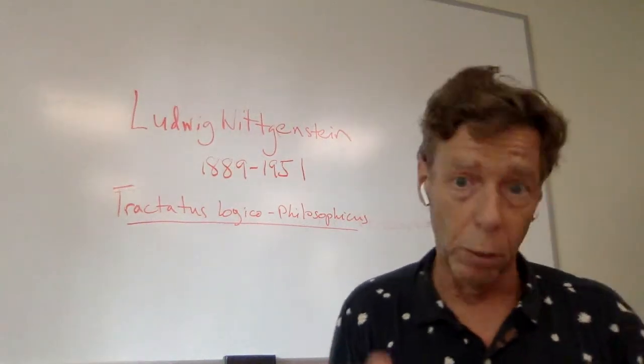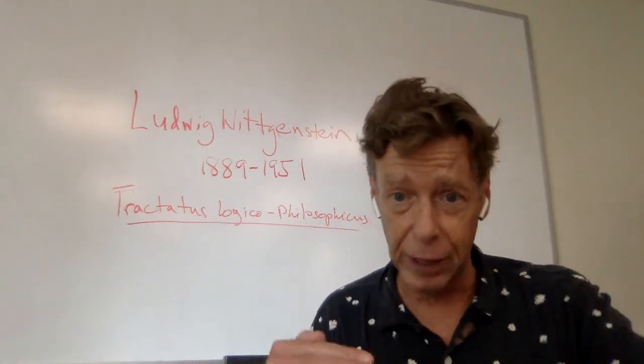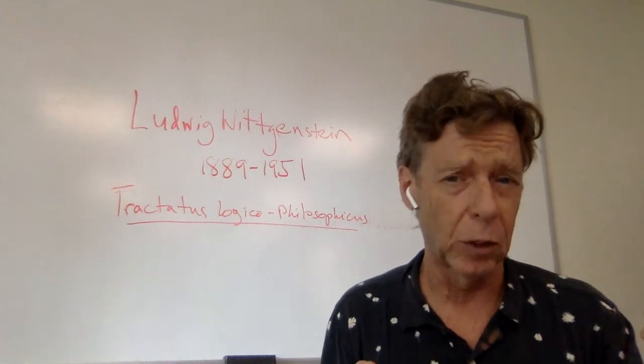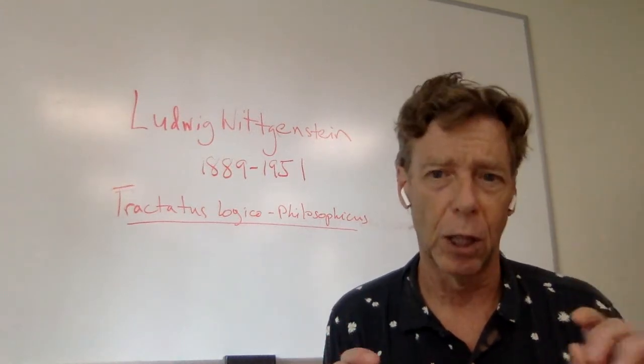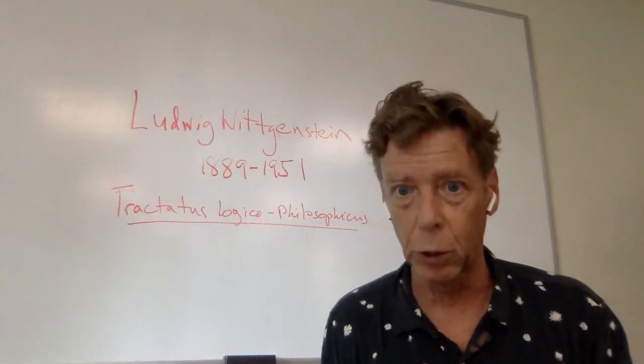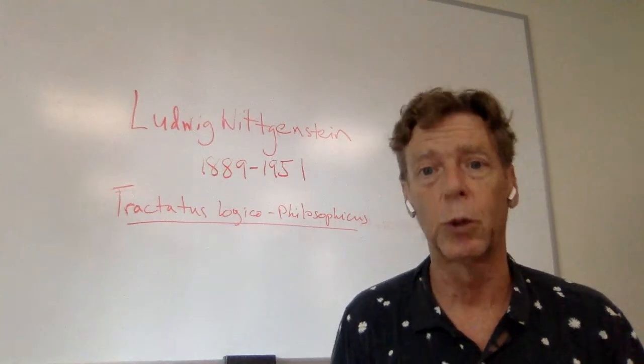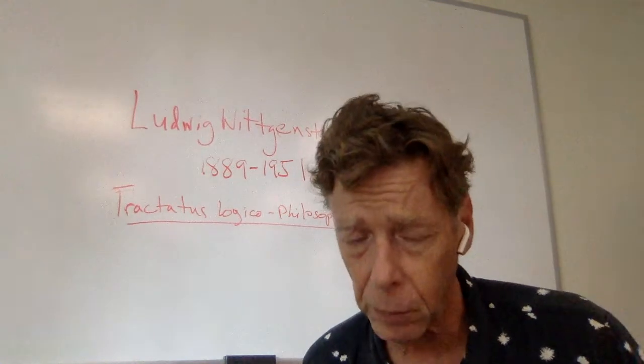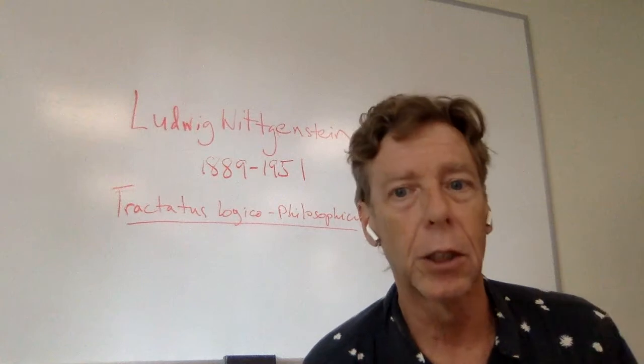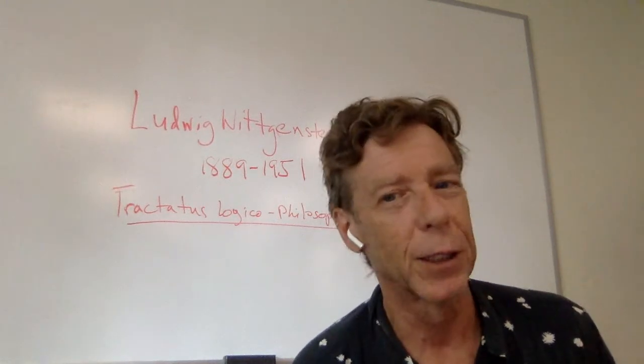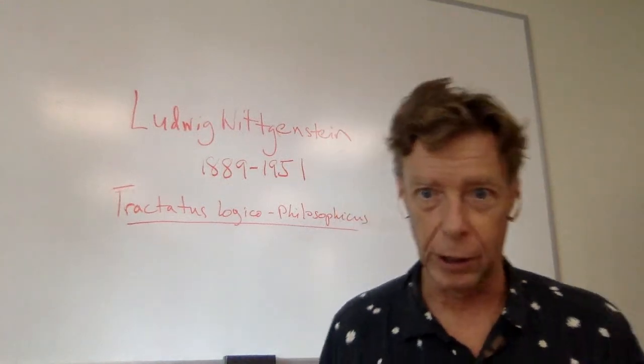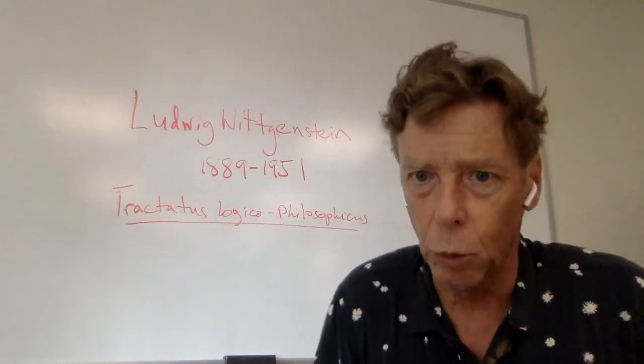And then we'll go on to 1.12. And there are seven enumerated sections systematically numbered to show the logical relations that he thinks exists between the claims that he's making. There's not a lot of argument in the Tractatus, basically just a series of assertions, but they are very compelling assertions, or at least many philosophers thought so at the time. The world is everything that is the case is one.